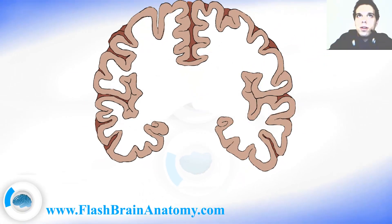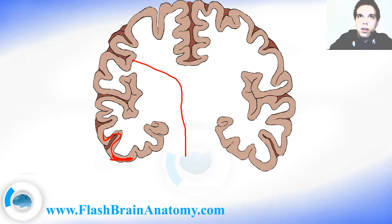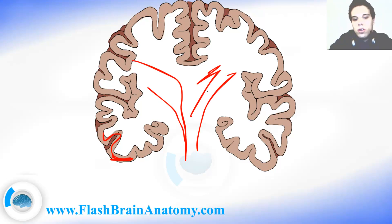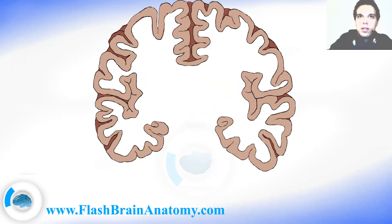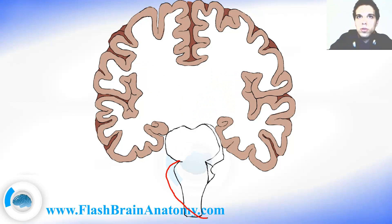Then comes the white matter. All the cortex is gray matter, and the fibers coming from the cortex and on are called the white matter. This is the medulla oblongata — this part over here is called the medulla oblongata.